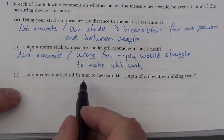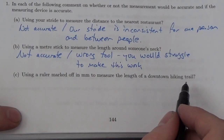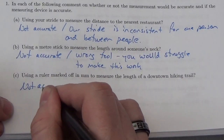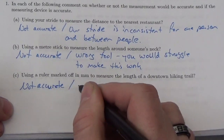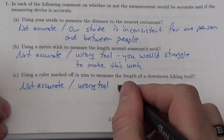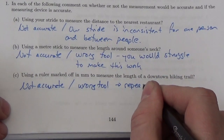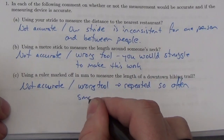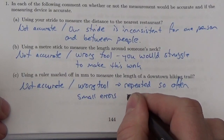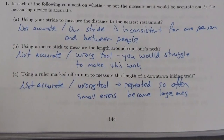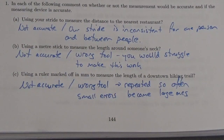Using a ruler marked off in millimeters to measure the length of the downtown hiking trail — this is not going to be accurate. This is the wrong tool. It would have to be repeated so often that small errors become large ones. Every time you did the measurement, you would create a little error, and after a while that little error becomes a big error.